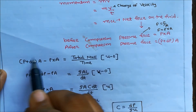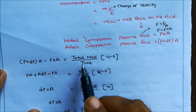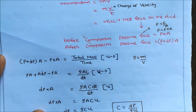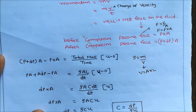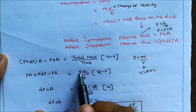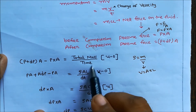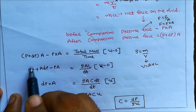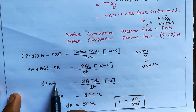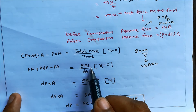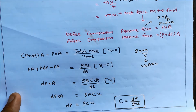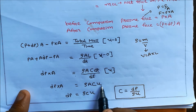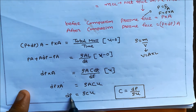Simplifying: P·A terms cancel, leaving dP·A equal to rho·A·L divided by dt, multiplied by U. Substituting L equals C·dt, the dt cancels, giving dP·A equals rho·A·C·U. Cancelling A from both sides, dP equals rho·C·U. Therefore, C equals dP divided by (rho times U).